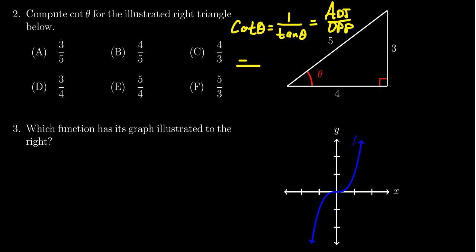So we're looking at the adjacent side, which would be four right here. The opposite side would be three. So we're going to get four thirds, which gives us option C.